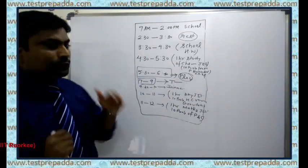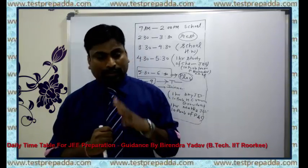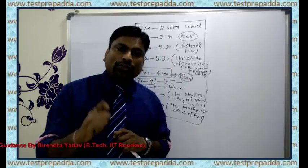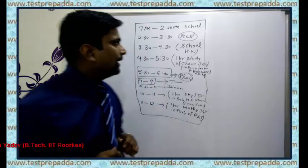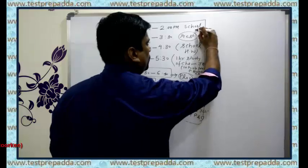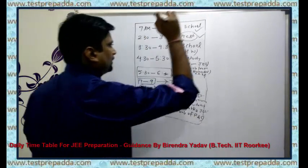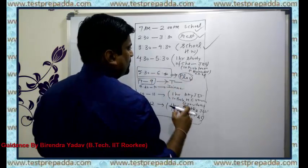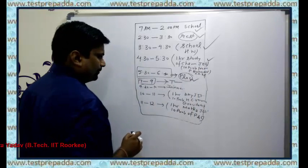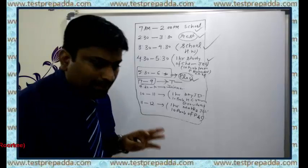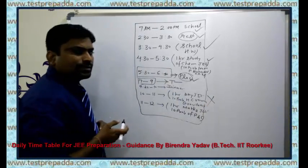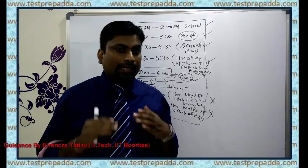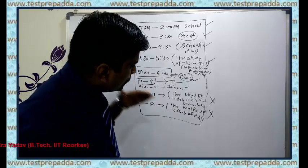On Monday, try to follow this schedule. Then, on Monday night, do an analysis of the work you have done. If you went to school — put a tick mark. Took rest — tick mark. Did school homework — tick mark. Studied Chemistry — tick mark. If for some reason you did not do something, put a cross mark. After analysis, you may find two cross marks.